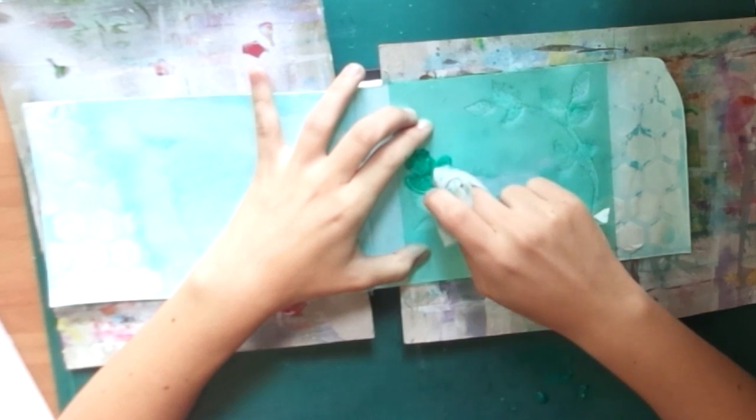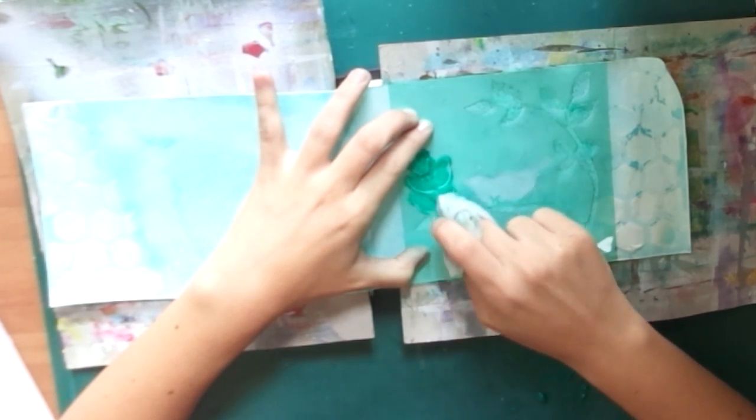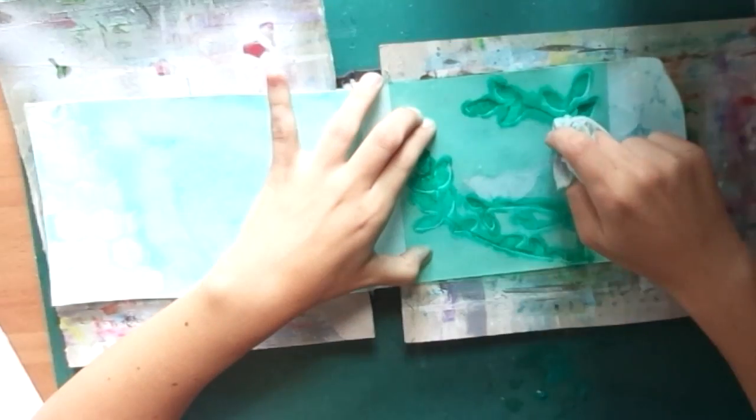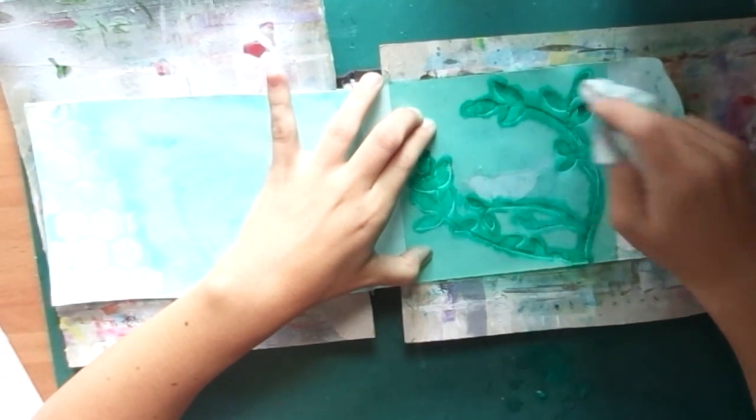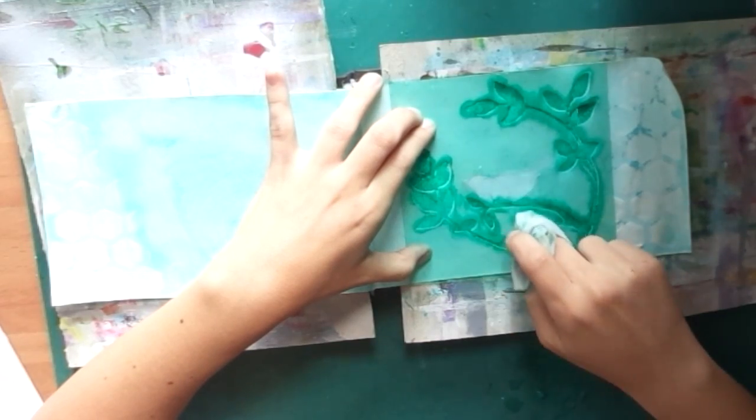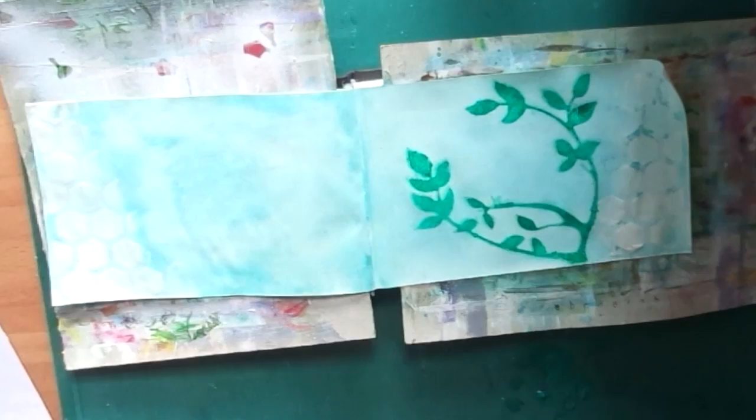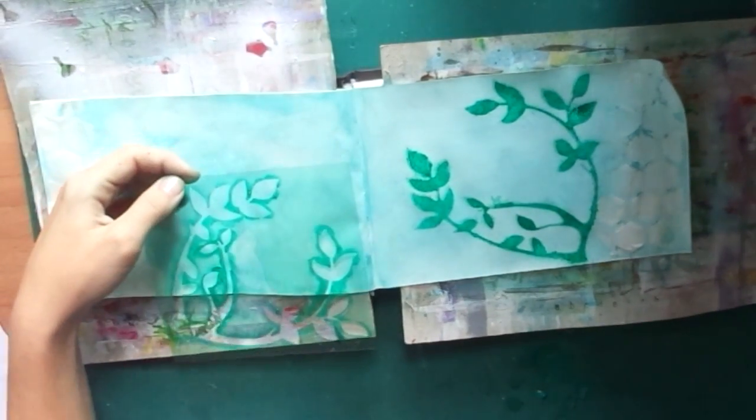You may notice that the bird is not colored because I used some cello tape to seal it before. There are a few stencils in which you can use this technique.